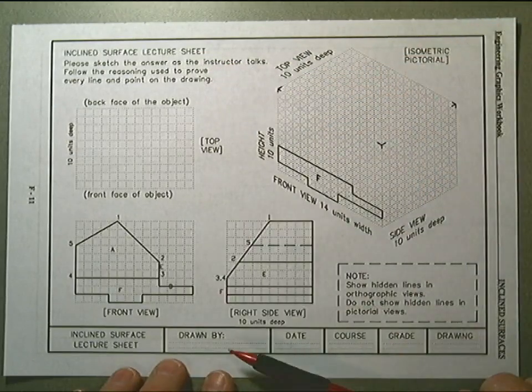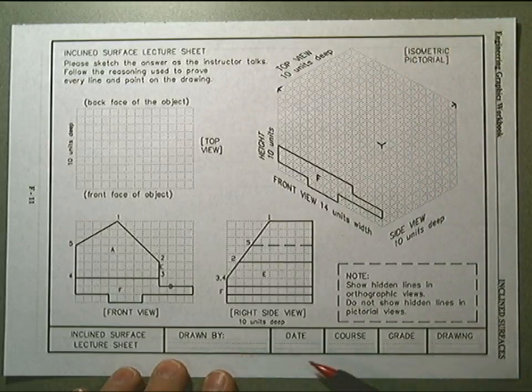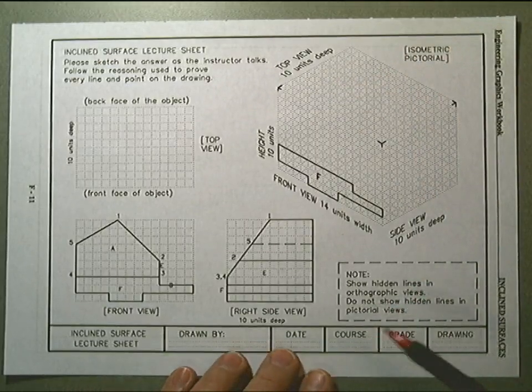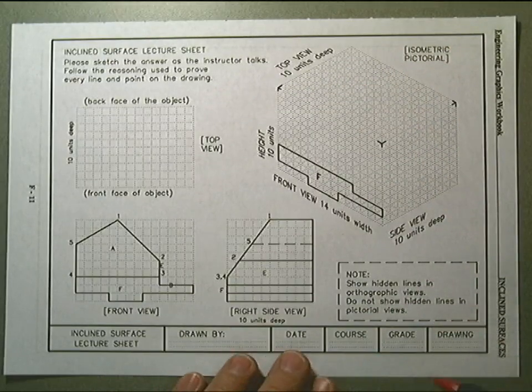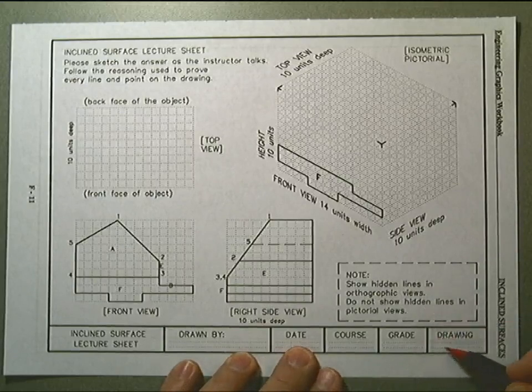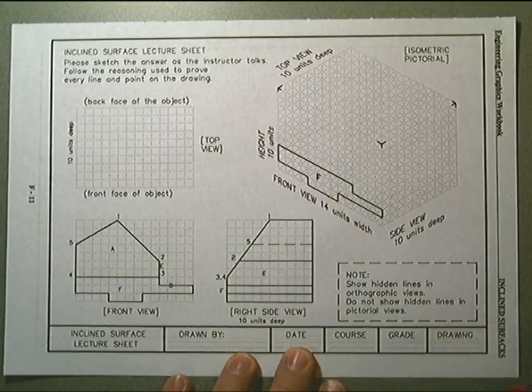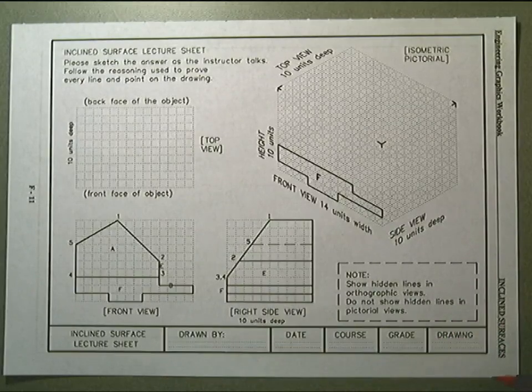Don't forget to put your name, your last name, date, the course which is 102 CAD, and the drawing. We will have to just label it as F-11, it looks like. It is the lecture sheet. You will read it.